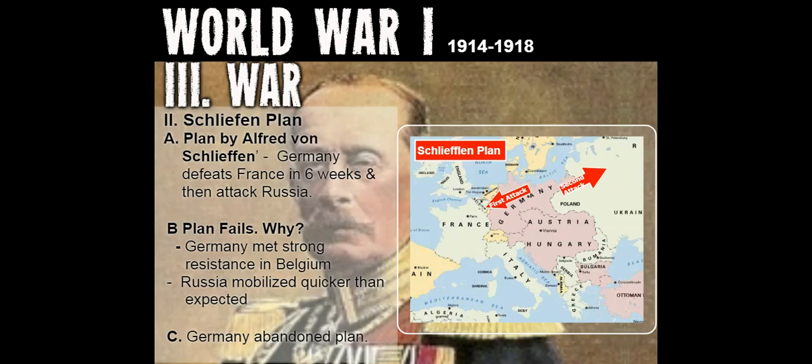The plan called for attacking and defeating France in the west, then rushing to focus their attention on the east to fight Russia. The Germans felt they could carry out such a plan because Russia lagged behind the rest of Europe in its railroad system and therefore would take longer to get supplies to the front lines.